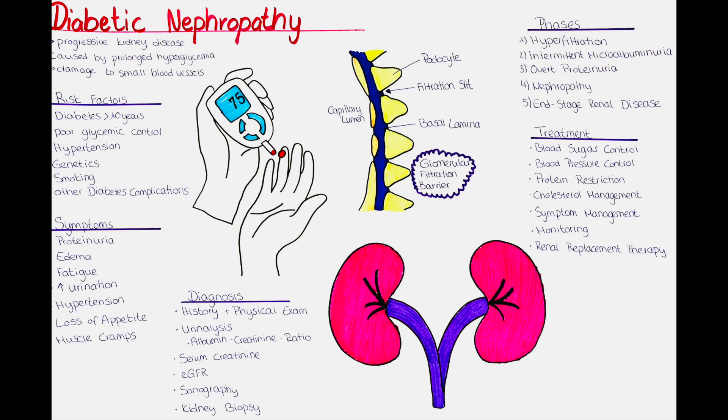The glomerular filtration barrier is comprised of the fenestrated endothelium of the blood vessels, the glomerular basement membrane and the podocytes. It is a specialized structure located in the renal corpuscle, which is the initial part of the nephron responsible for filtering the blood and forming urine. The main function of the glomerular filtration barrier is to selectively allow certain substances to pass through while preventing the passage of others, thereby regulating the composition of the filtrate that eventually becomes urine.